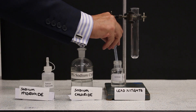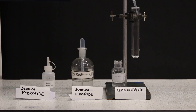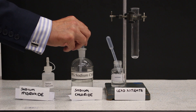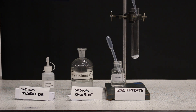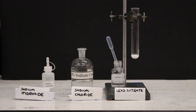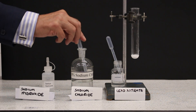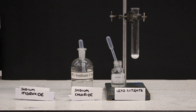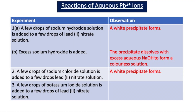In the second experiment, we put a few drops of lead-2 nitrate into a test tube and add a few drops of sodium chloride solution. Once again, we form a white precipitate, and this precipitate is lead-2 chloride. We record this observation in the table: adding sodium chloride solution to lead nitrate solution produces a white insoluble solid of lead-2 chloride.